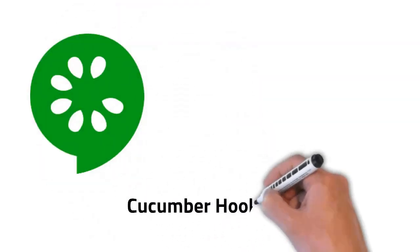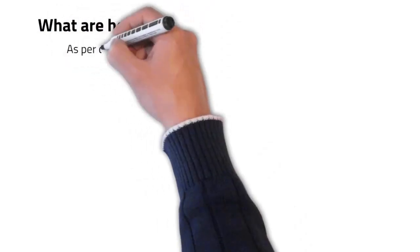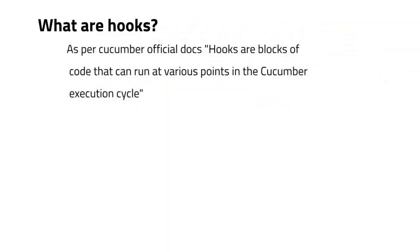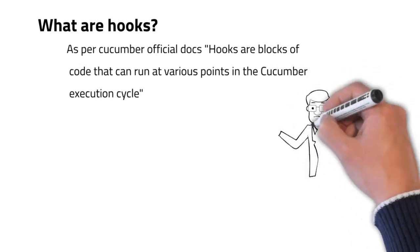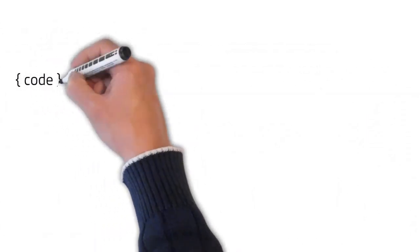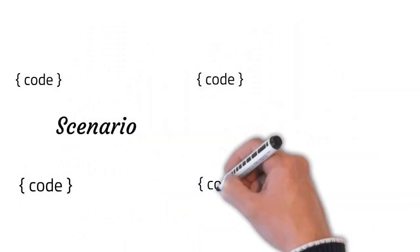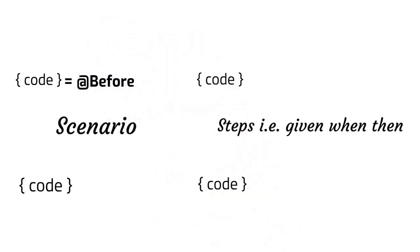Hi folks, in this video we are going to have a look at Cucumber hooks and I'll be using Java as my platform. Now, what do we mean by Cucumber hooks? The official documentation describes it as a block of code that can be run at various points in the Cucumber execution cycle. While that is a very apt definition, it's not very exact in terms of functionality, so to understand it better we can say that hooks are blocks of code that can be run before or after every scenario.